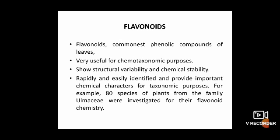Coming now to the secondary metabolites one by one, starting with flavonoids. Amongst the secondary metabolites, flavonoids, which are the commonest phenolic compounds of leaves, have been very useful for chemotaxonomic purposes. Both monocots and dicots have been extensively surveyed for these compounds, which show structural variability and chemical stability besides widespread distribution. They can rapidly and easily be identified and provide important chemical characters for taxonomic purposes.